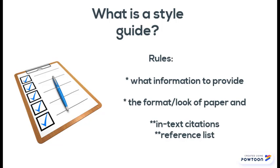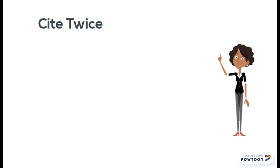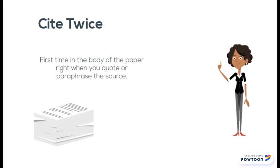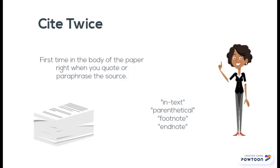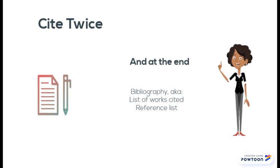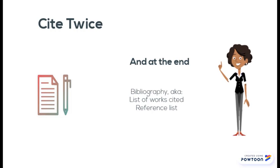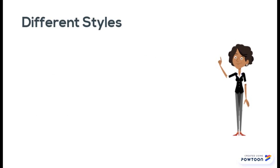No matter what style you use, be aware that you'll be citing twice. First, a brief reference or number in the body of your paper right when you quote or paraphrase your source — this is referred to as an in-text citation, parenthetical citation, footnote, or endnote. You'll also provide a complete citation at the end of your paper in your bibliography, also known as a list of works cited or reference list.